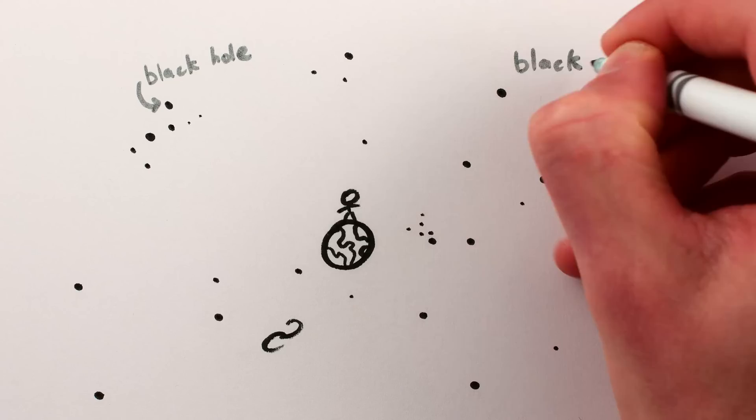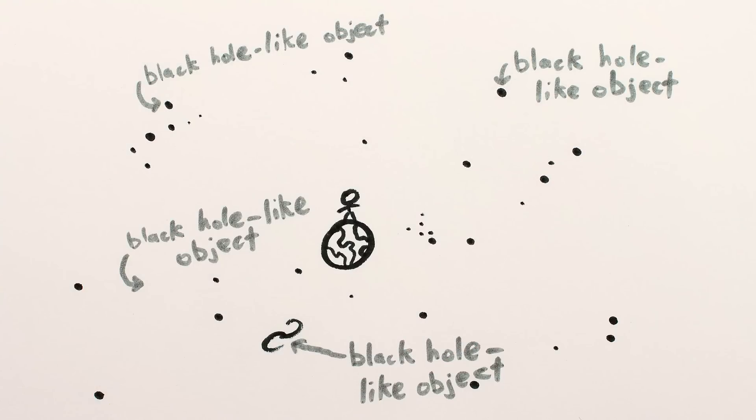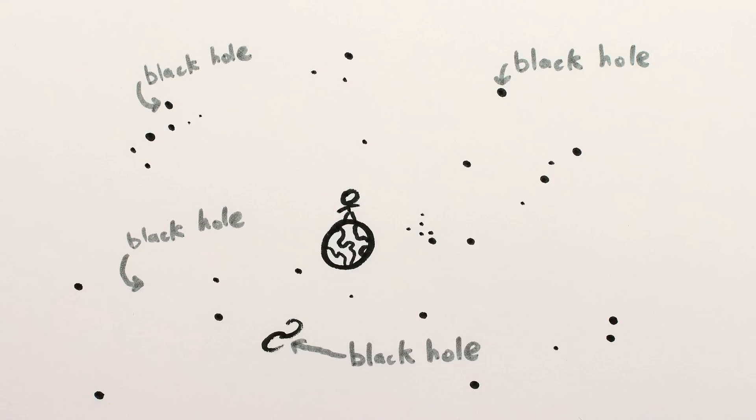To quote an astronomer, we have strong confidence that black holes, or at least objects that have many of the features of black holes, exist. In other words, if it looks like a black hole and acts like a black hole, we call it a black hole.